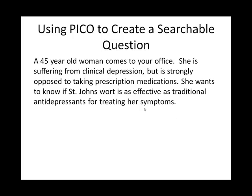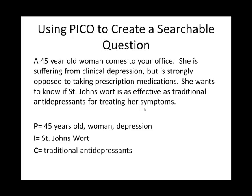Let's start with P. We know that our patient is 45 years old, a woman, and is suffering from depression. For I, we know that the intervention she would like to try is St. John's wort. C, or our comparison, will be traditional antidepressants. And O, or the outcome that we're hoping for, is a decrease in symptoms of depression.